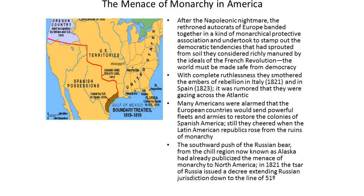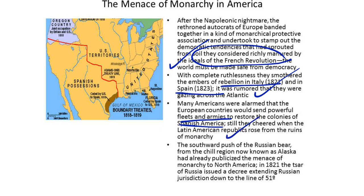After the Napoleonic nightmare, the rethroned autocrats of Europe banded together in a monarchical protective association, and undertook to stamp out the democratic tendencies that had sprouted from soil manured by the ideals of the French Revolution. With complete ruthlessness, they smothered the embers of rebellion in Italy in 1821 and Spain in 1823, and it was rumored that they were gazing across the Atlantic. Many Americans were alarmed that the European countries would send powerful fleets and armies to restore the colonies of Spanish America, even as Latin American republics rose from the ruins of monarchy.